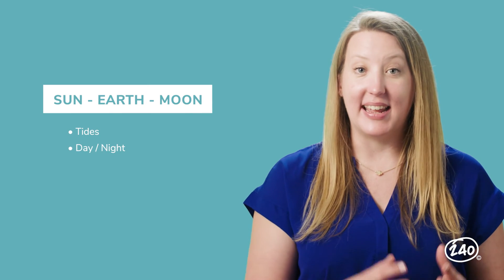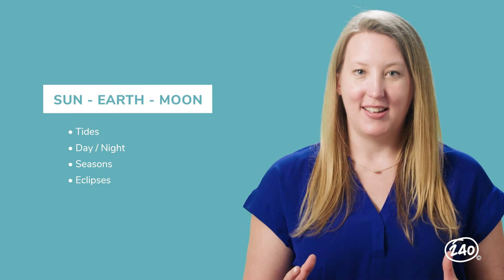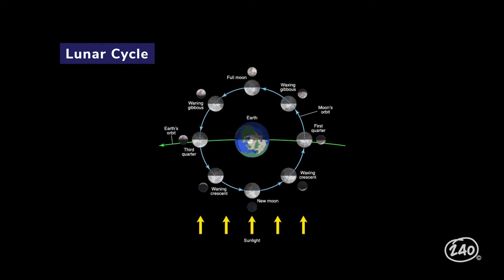We've only got one objective left: astronomy. A big thing to know in this section is the relationship between the Earth, the Sun, and the Moon — meaning how tides, day and night, seasons, and even eclipses work. So you'll definitely want to know your lunar cycle. Make sure you know where the Moon is in relation to both the Earth and the Sun during its whole 28-day cycle.